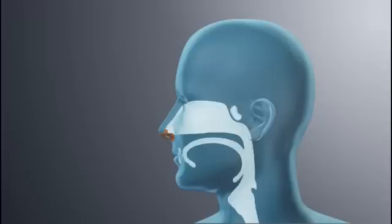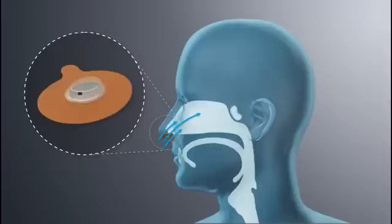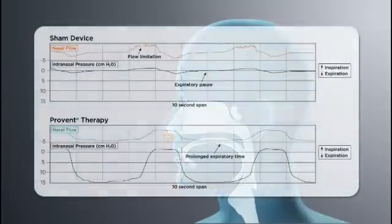The proprietary micro valve technology uses a person's own breathing to create EPAP. During inspiration, the micro valve opens allowing for nearly unobstructed airflow. Then during expiration, the micro valve closes, partially restricting airflow to create EPAP and maintain pressure in the airway through the start of the next inspiration. This helps maintain airway patency during sleep.